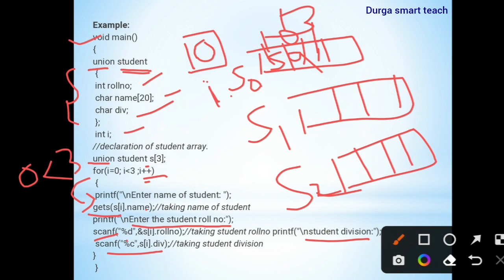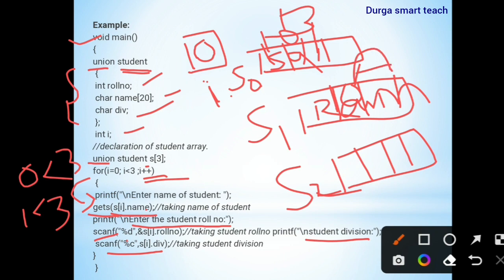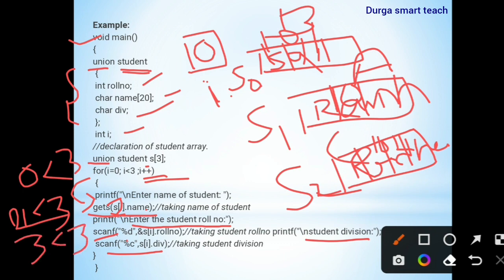Since 1 is less than 3, the loop continues. The name is stored in s[1].name, then roleNumber replaces it, then division replaces roleNumber. i is incremented to 2; since 2 is less than 3, the loop continues again. The name is stored in s[2].name, then roleNumber is stored, then division is stored. When i is incremented to 3, the condition 3 less than 3 is false, so the loop exits. This is how the array of union works.